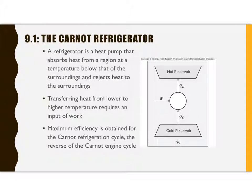Let's start by looking at the Carnot refrigerator. A refrigerator, for our purposes, is a device that operates in a cycle — it goes through a series of steps that come back to the original state, and it absorbs heat from a low temperature and rejects that heat to a higher temperature. Generally, the low temperature is less than the surroundings, and the high temperature is roughly the surroundings' temperature. This is only possible if you have work input to the cycle, as we saw when we looked at the second law.